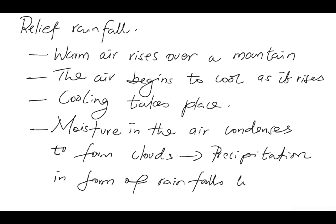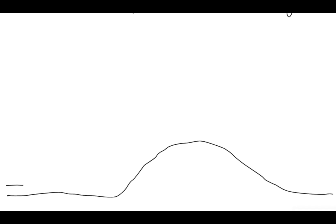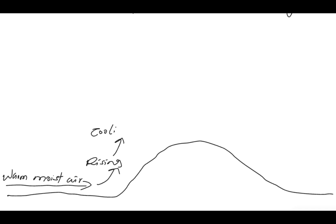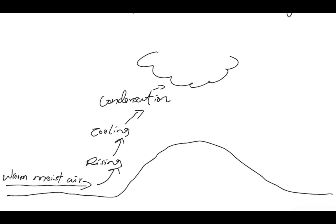The dry air will then move on to the other side as dry air. Let's look at a diagram demonstrating how this takes place. Assuming this is the mountain, warm moist air is blowing from one side — in most cases from a moist area such as an ocean, a lake, or any area with a water body. When it reaches the mountain it starts rising, then cooling takes place, then condensation, which leads to the formation of clouds.